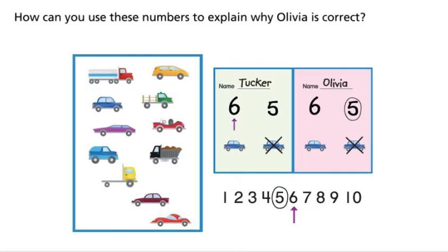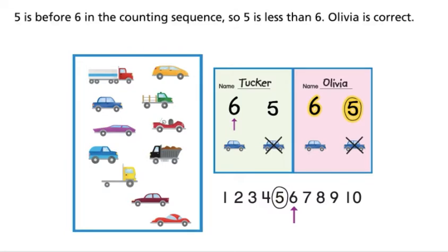How can you use these numbers to explain why Olivia is correct? Five is before six in the counting sequence, so five is less than six. Olivia is correct.